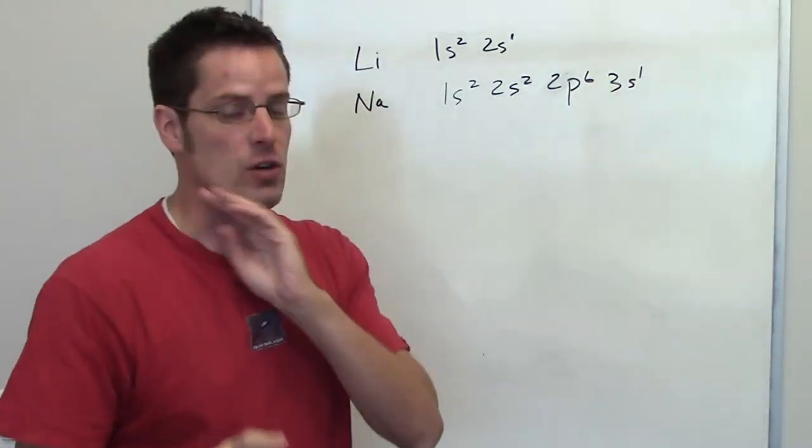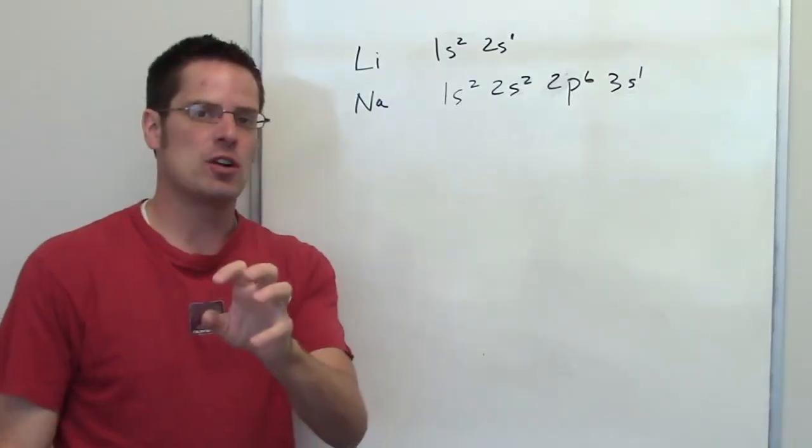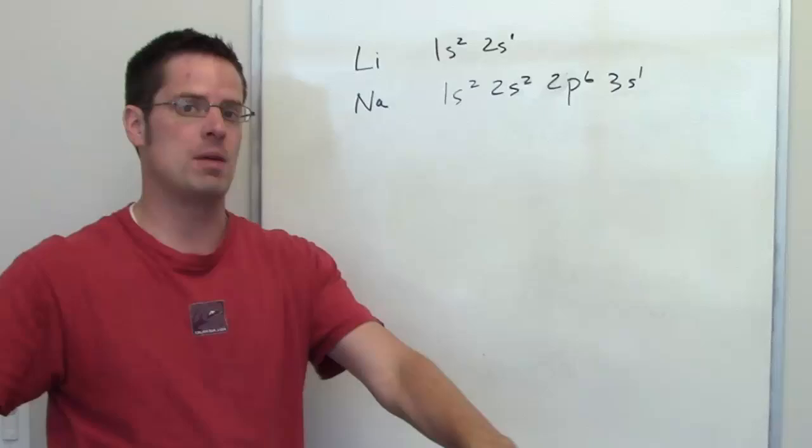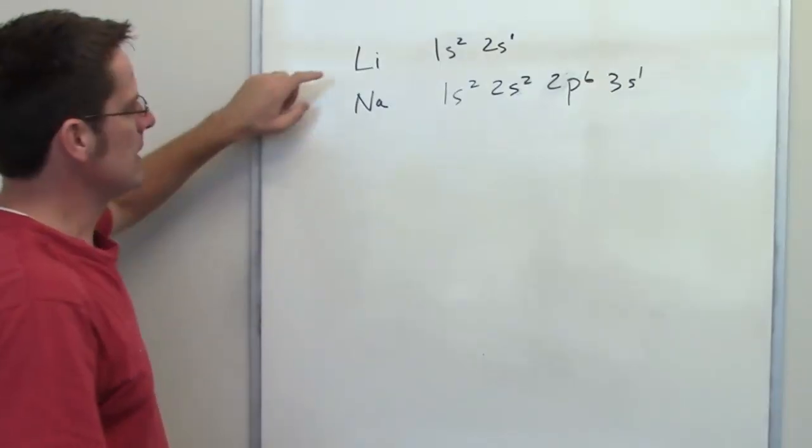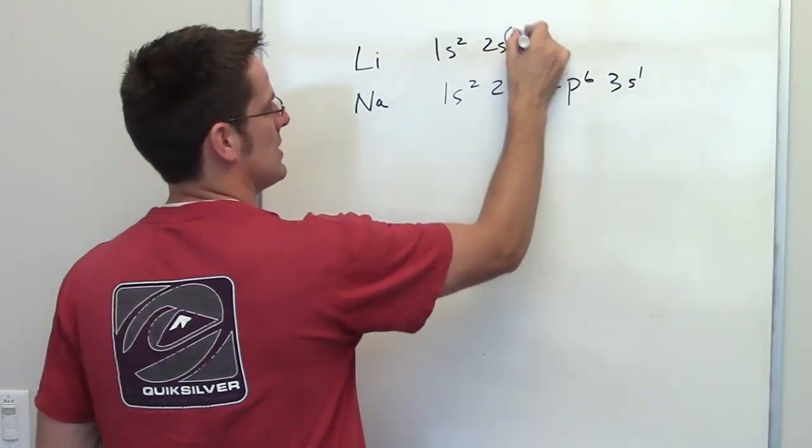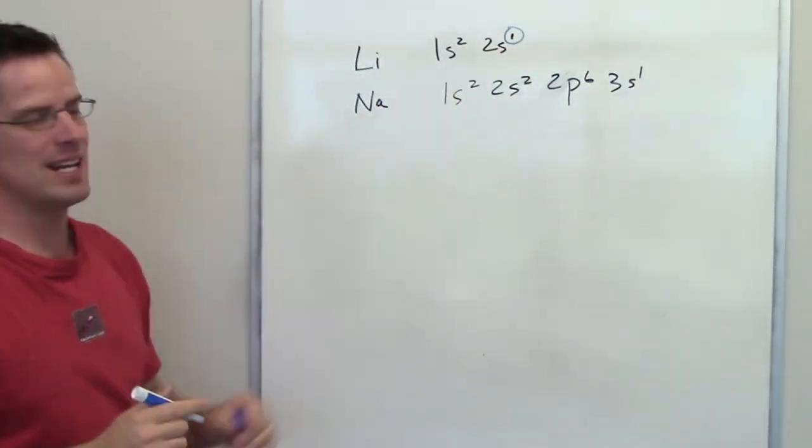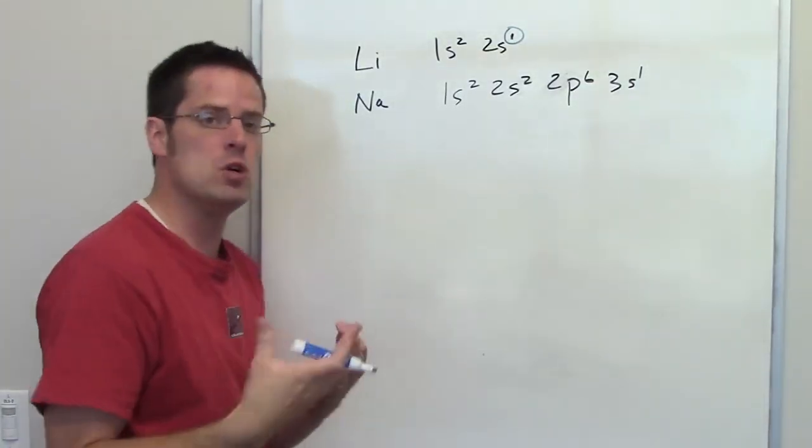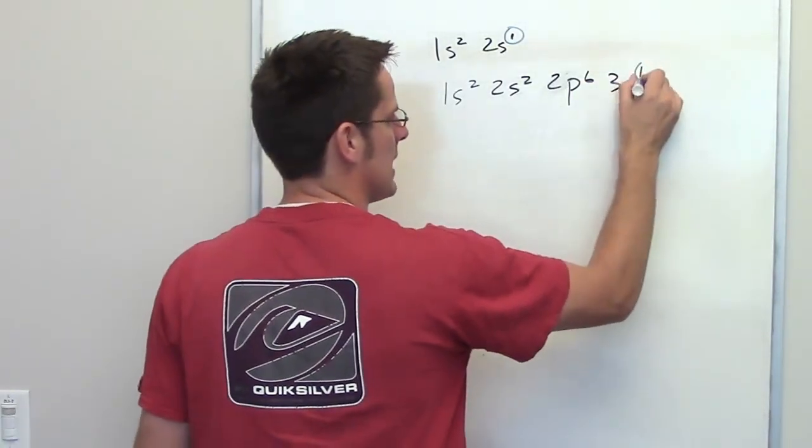When we talk about ionization, or first ionization energies, that is the amount of energy required to remove or tear away an electron from an atom. In the case of lithium, the electron that's being torn away in its first ionization is that one. That is an electron in a 2s orbital. By comparison, the first electron being removed from a sodium is in the 3s orbital.